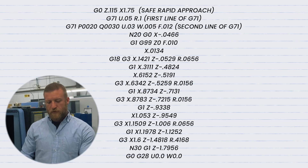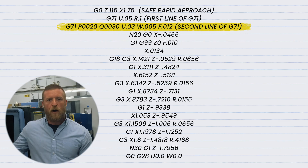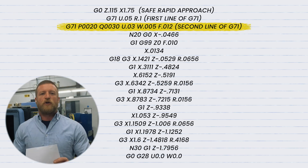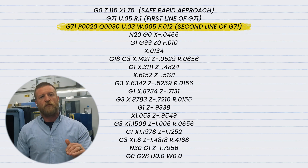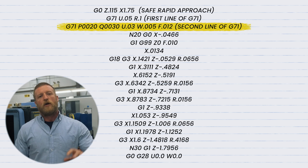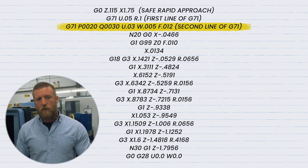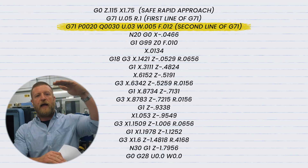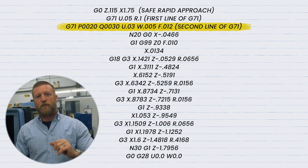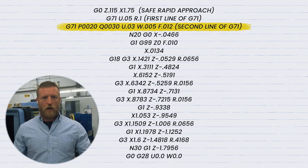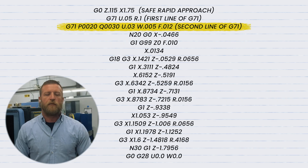The second line is your G71, P0001, Q0002 — those correspond to the N-lines. After that are your U values. The U value on line two is different than the U value on line one. The U value on line two is your material allowance: how much material are you going to leave on that diameter for your finish tool to clean up? I like to leave the nose radius, and we've talked about that in other videos on my channel.